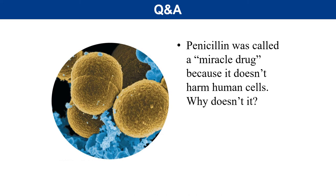A textbook question for Zoom discussion: Penicillin was the first antibiotic and gave rise to dozens of antibiotics that work against the cell wall. Consider this fact and think about why cell-wall-targeting antibiotics might be well tolerated by the human body.